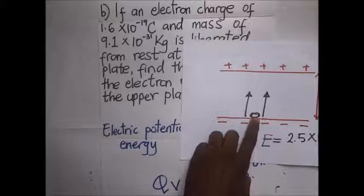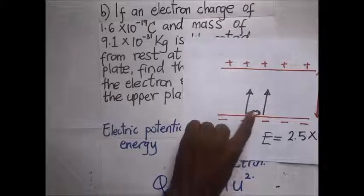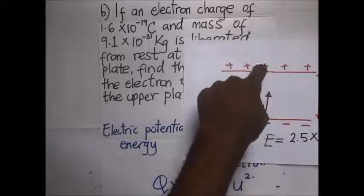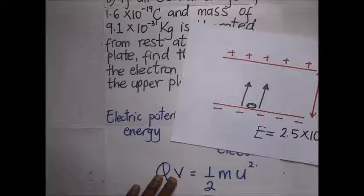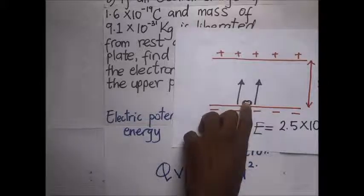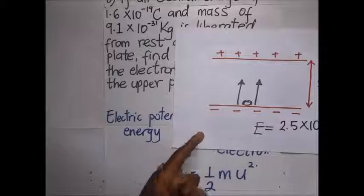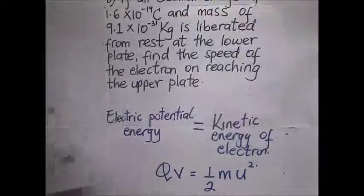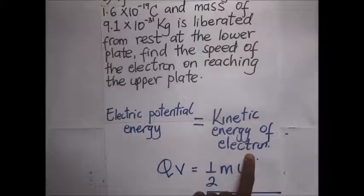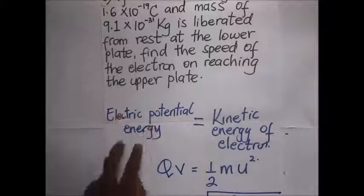As the electron moves upward, it initially has electric potential energy. While moving through the field, this electric potential energy is being converted into kinetic energy, which propels it toward the upper plate. From the law of conservation of energy, energy can neither be created nor destroyed but can be changed from one form to another. So the electric potential energy possessed by the electron in the field is converted into kinetic energy as it moves toward the plate.